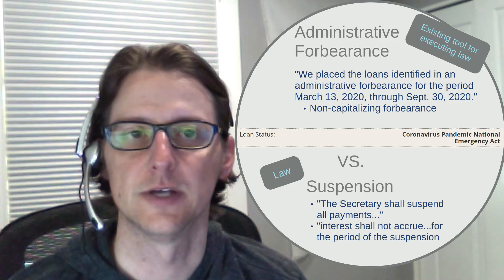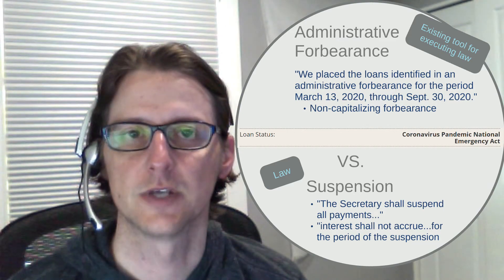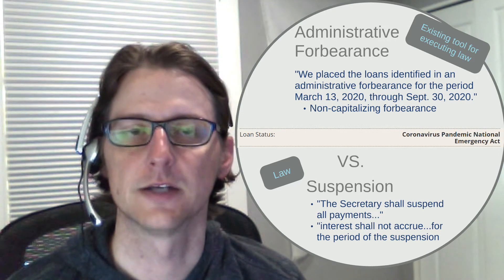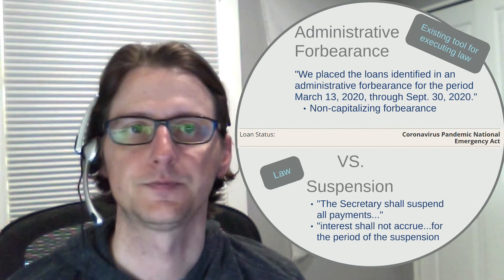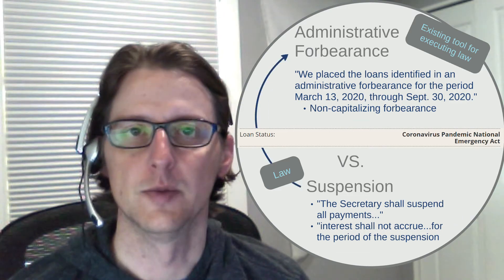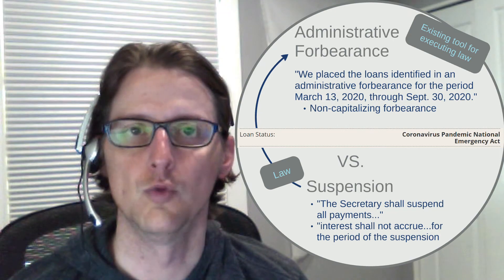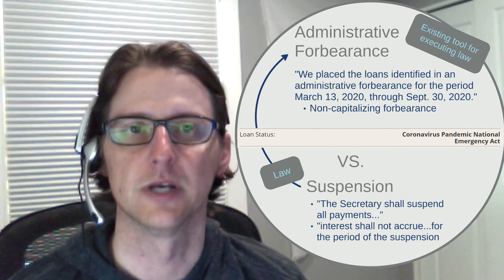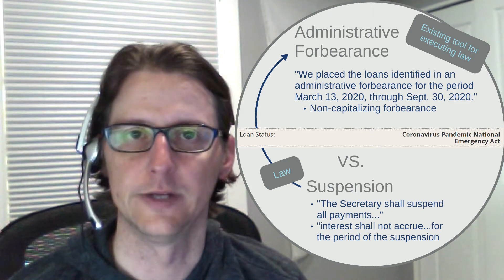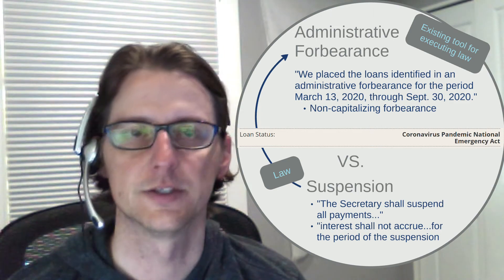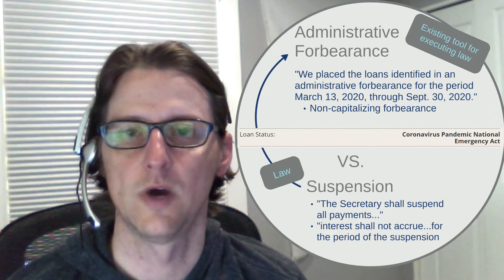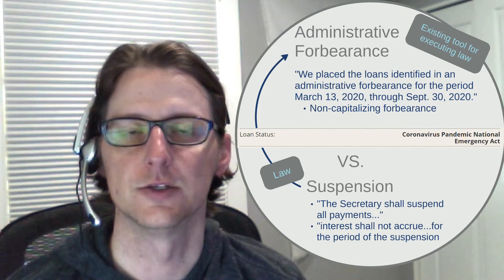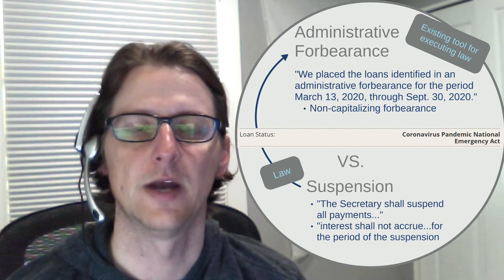If you don't have something that shows that this is specifically related to the coronavirus — an administrative forbearance that was applied automatically as a result of the CARES Act — then you may want to find out what type of status your loans were in prior to that suspension taking place. The administrative forbearance is the tool the loan servicers are using to execute the suspension. There's probably not a real good reason to end that administrative forbearance, no matter what your financial position is. You can always decide later as the suspension period winds down if you want to or need to make any additional payments towards your student loans, so I would keep that administrative forbearance in place.